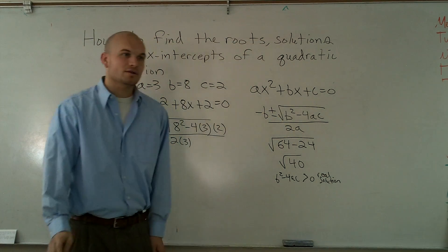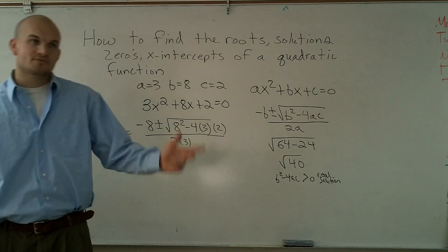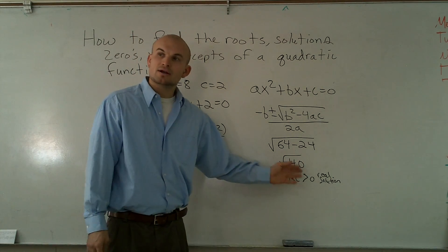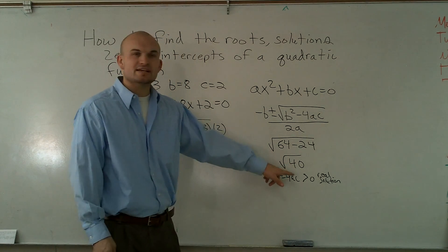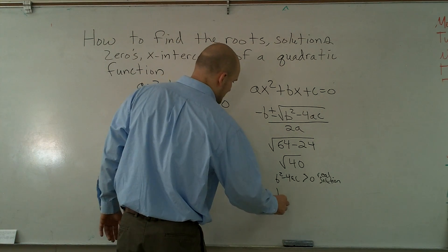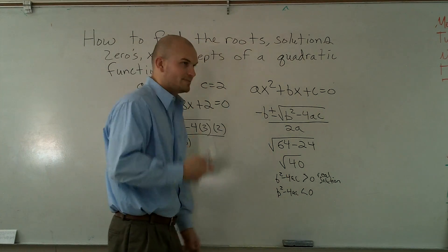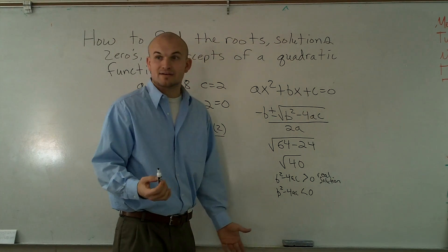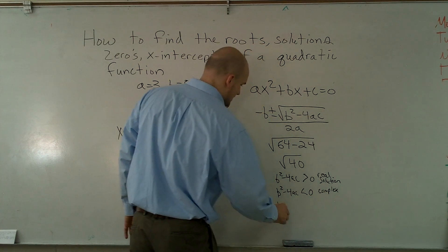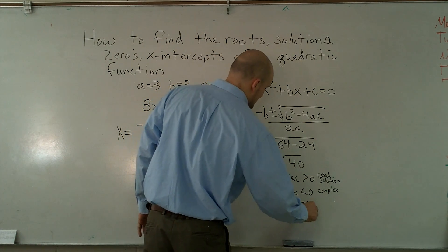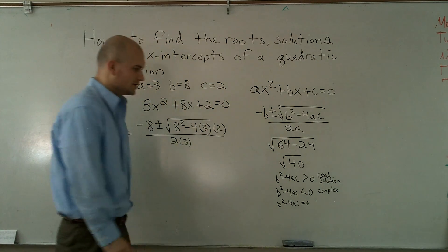So my answer is going to be real. Now, if the discriminant is a perfect square number — like 9, 16, 4, 25, 36, 49, or 64 — then your solutions are going to be rational. If it's not a perfect square, like the square root of 40, you're going to have irrational real numbers. And if b squared minus 4ac is less than 0, then it's a complex solution, because you can't take the square root of a negative number. Finally, if b squared minus 4ac equals 0, you're only going to have one real root.